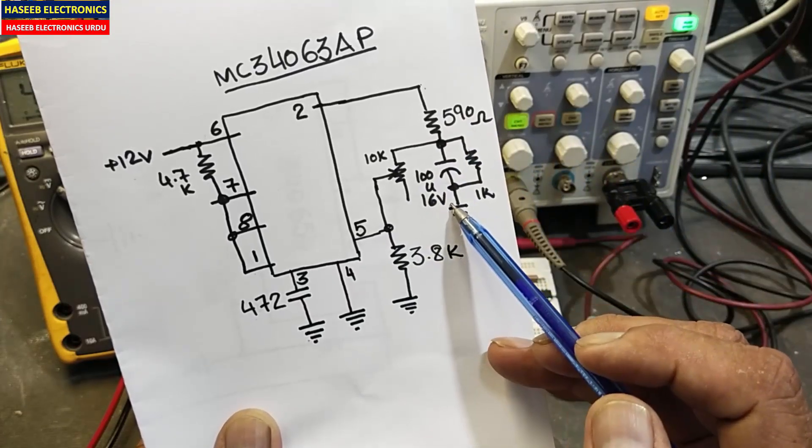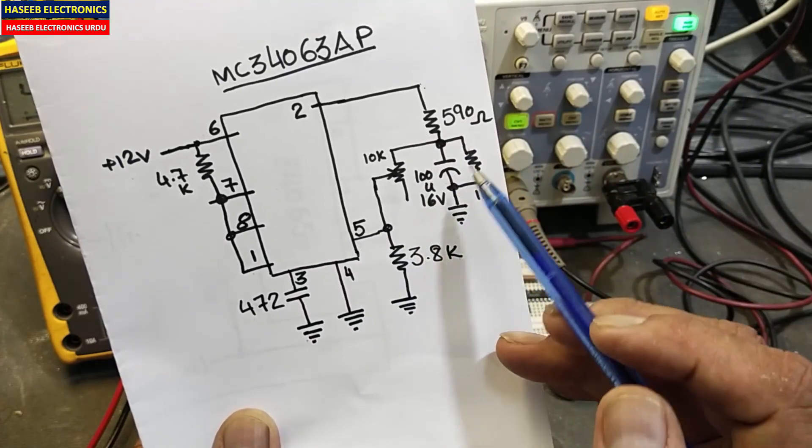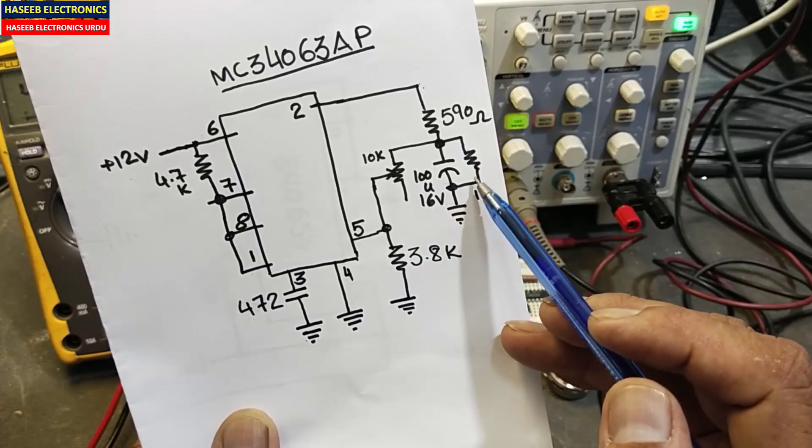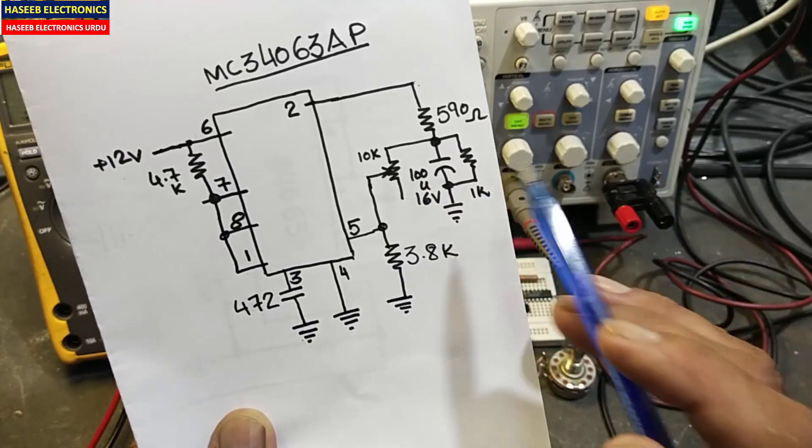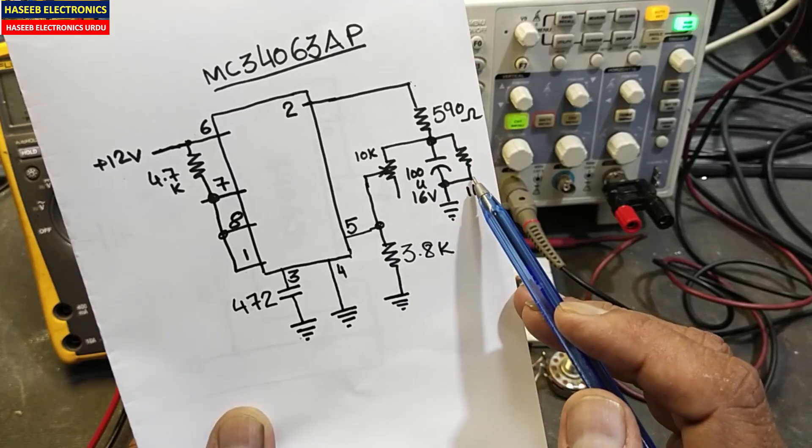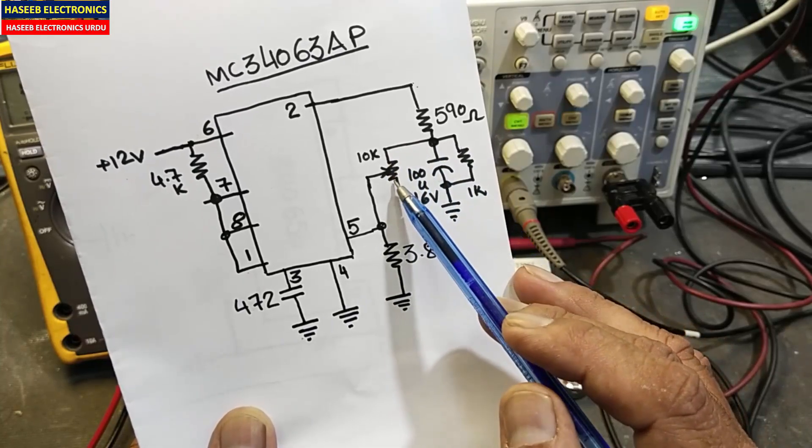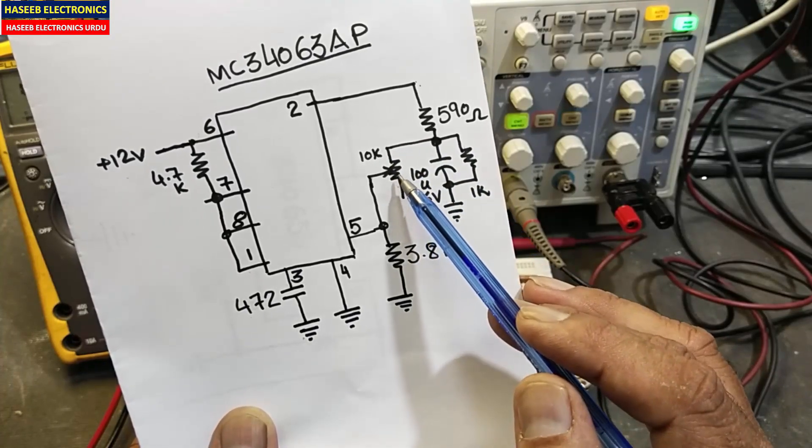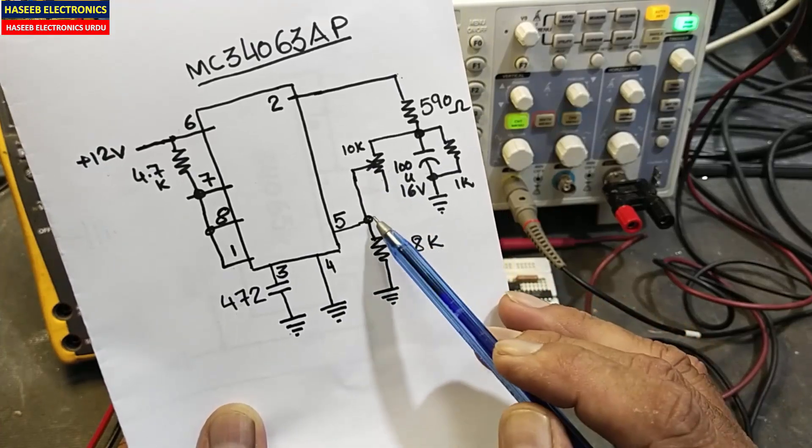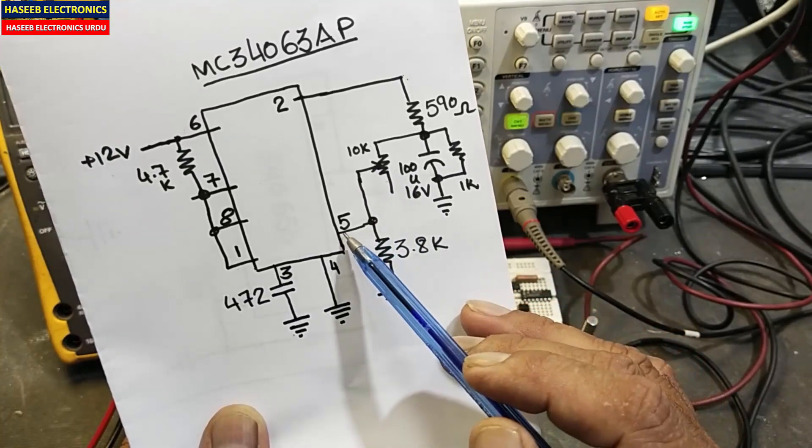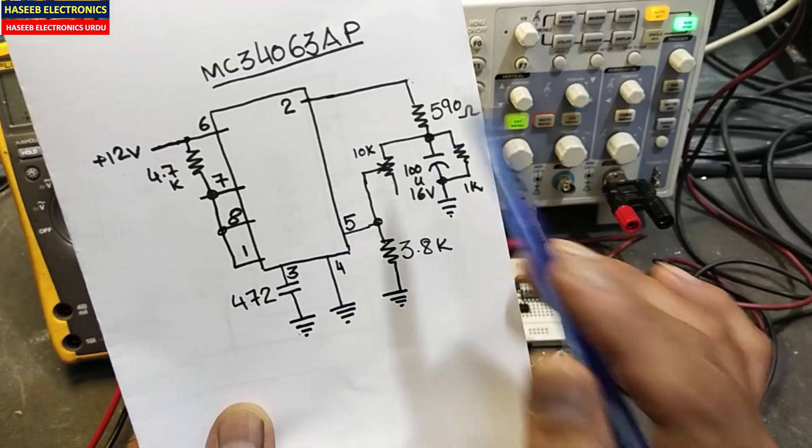Capacitor 100 microfarad, 16 volt, 1 kilo ohm resistor in parallel with the capacitor so it will work as a load resistance. Then we have 10 kilo ohm potentiometer with 3.8 kilo ohm voltage divider network connected to pin number 5 to adjust the output voltage.